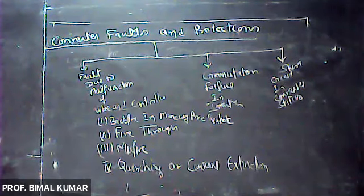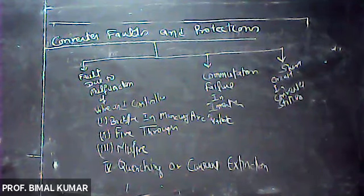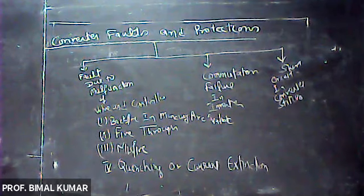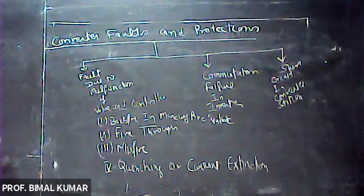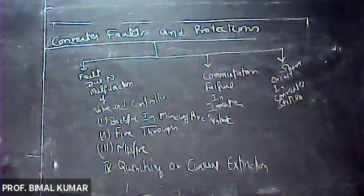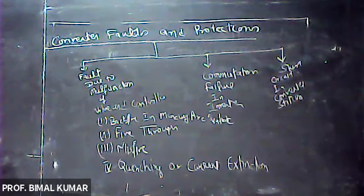Arc back in mercury arc valves is of a random nature - it occurs randomly. This is a non-self-clearing fault and results in severe stresses on the transformer winding, as the incidence of arc back is common.